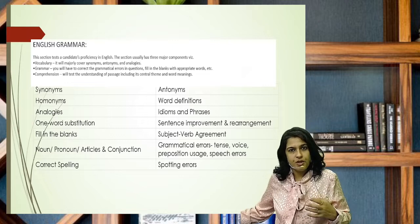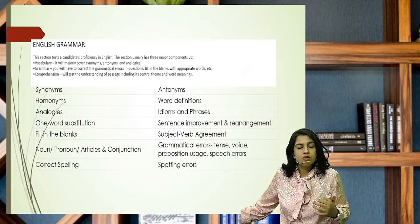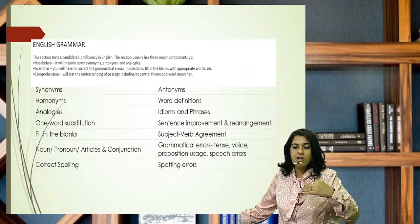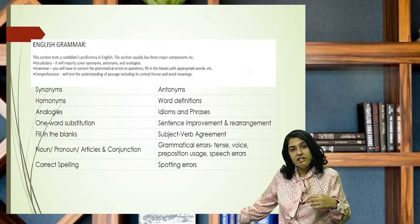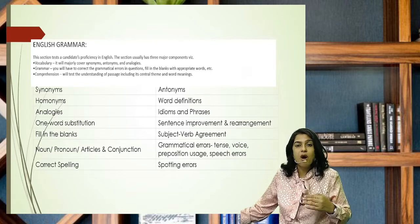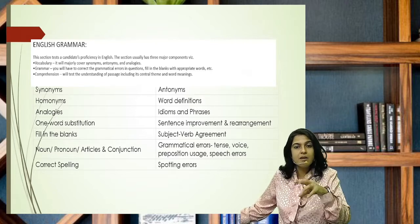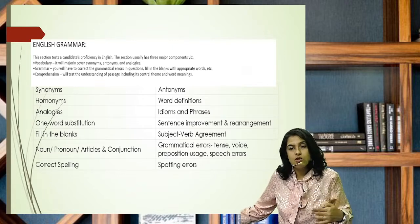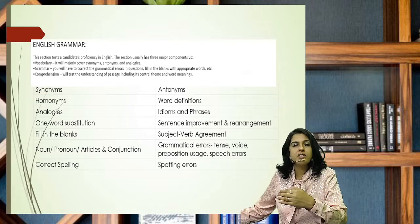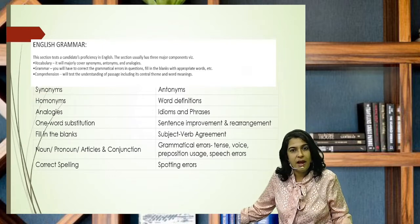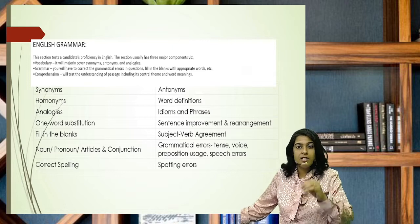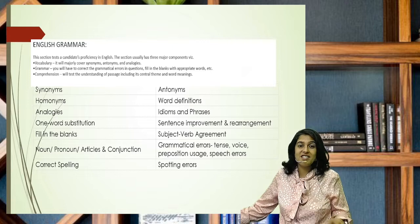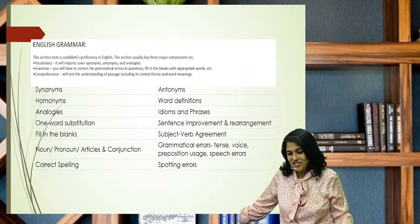Now whenever you have a comprehension, there's a passage, and both direct and indirect questions are asked. Direct questions are those whose answers you'll find directly in the passage. And indirect questions are those where you have to derive the answer yourself. You have to read the passage and derive the answer in terms of what is the tone of the passage. The tone is not given in the passage. They would not say this is a descriptive passage. You have to read and derive that this passage's tone is like this. So such questions are also asked - direct and indirect questions.